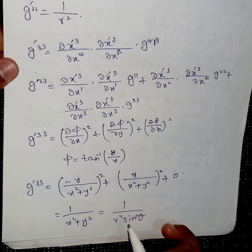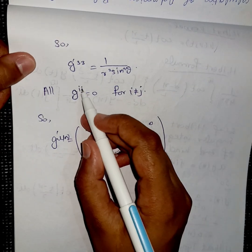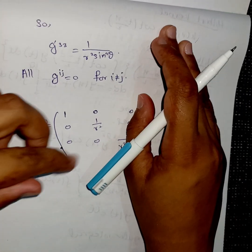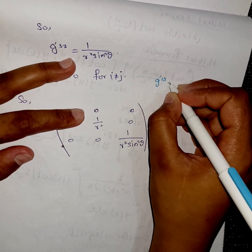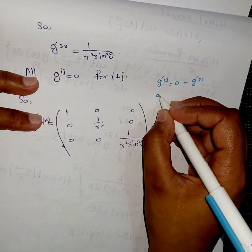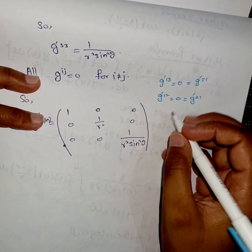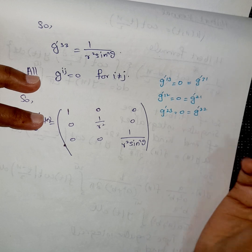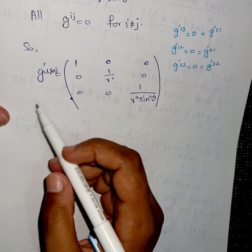Similarly, g'³³ simplifies to 1/(r² sin²θ). The off-diagonal elements g_ij = 0 for i ≠ j. For example, g'¹³ = 0, and by symmetry g'³¹ = 0; likewise g'¹² = 0 and by symmetry g'²¹ = 0; and g'²³ = 0. All off-diagonal values are zero.